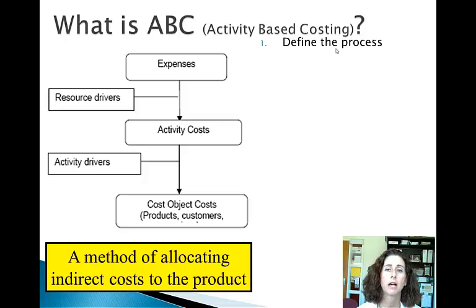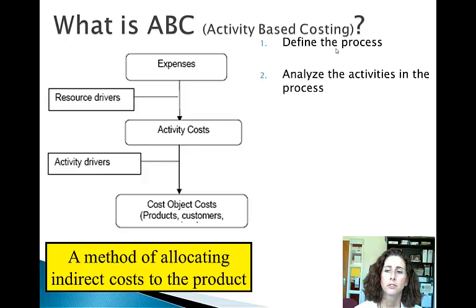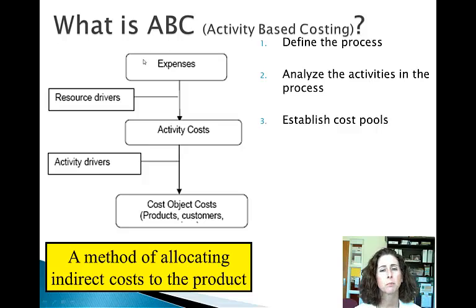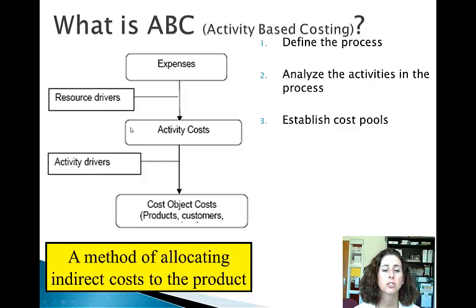Those are value-added activities, which is another topic we learned about in IME 223. We analyze the activities for the process and establish cost pools. For each activity, we have a cost pool associated with it. We look at overhead costs — purchasing, human resources, maintenance, capital equipment — and figure out how those overhead costs should be allocated into the different activity cost pools. In our case, that's baking and frosting.